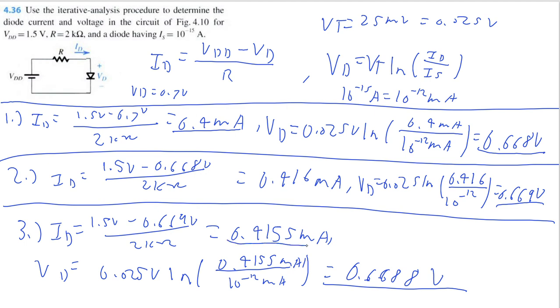I think this is a good point to stop because, as you can see, our calculations for VD for iterations 1, 2, and 3 were all really close. That means we iterated enough that we're pretty accurate with our answer. We can comfortably stop here. So we would determine the diode current to be 0.4155 milliamps and the diode voltage to be 0.6688 volts.